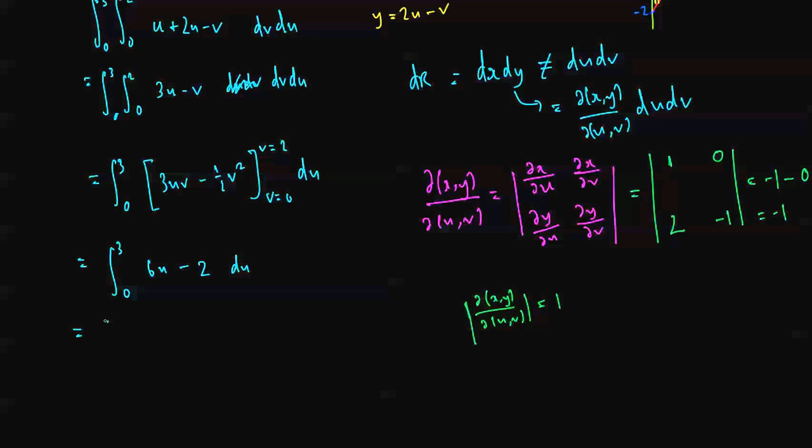So I now have the integral 3u squared minus 2u, subbing in u equal to 3 and u equal to 0. That's equal to 3 squared is 9 times 3 is 27 minus 6, so it's equal to 21.